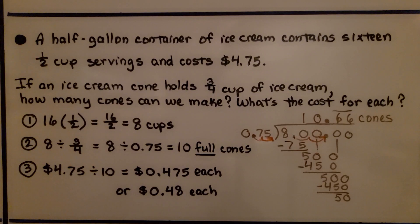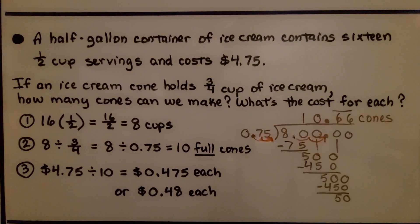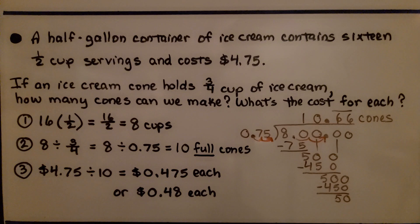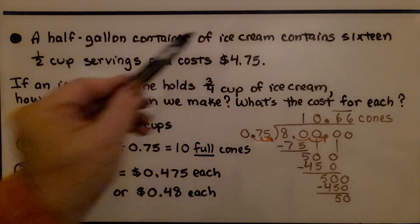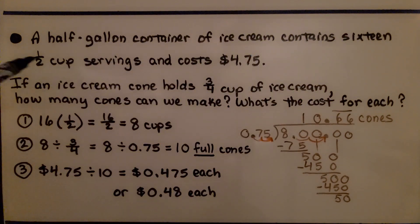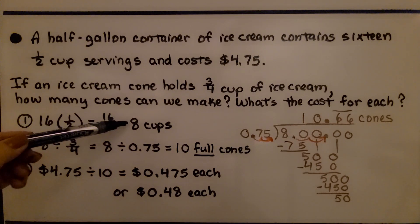A half-gallon container of ice cream contains 16 one-half cup servings and costs $4.75. If an ice cream cone holds 3/4 cups of ice cream, how many cones can we make and what's the cost for each cone? The half-gallon container holds 16 one-half cup servings, so we do 16 times 1/2, that's 16 halves, that's 8 cups of ice cream.